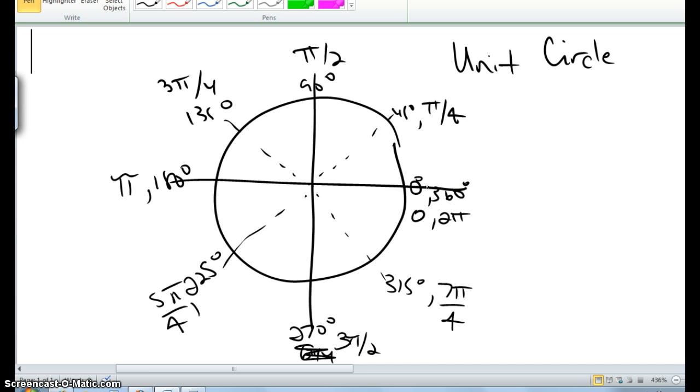Now, if I want to go ahead and do the ordered pairs on my 45s, again we discovered in class today that those will always be square root of 2 over 2, square root of 2 over 2. Now some of them are going to be positive and some are negative. So we'll deal with that here in a little bit.